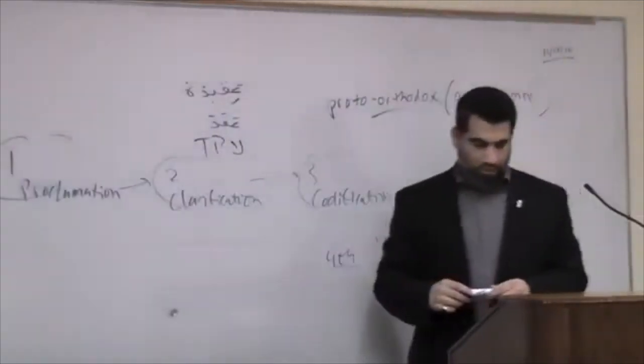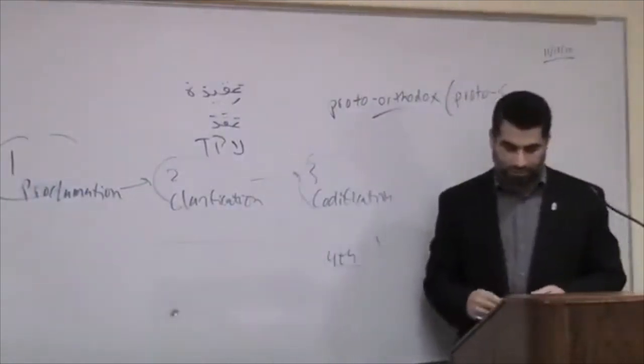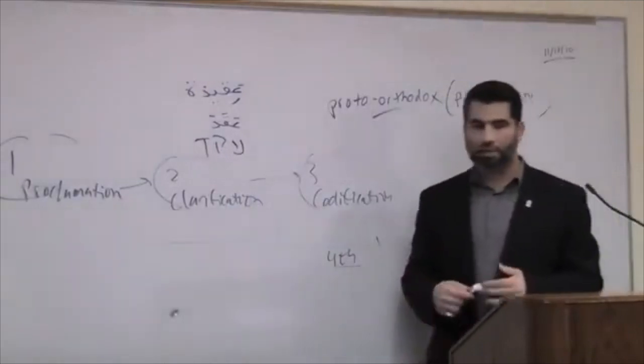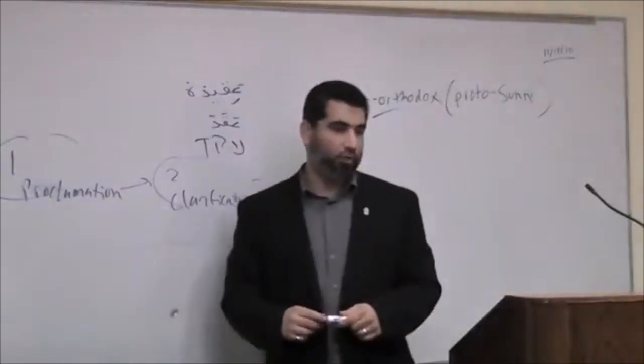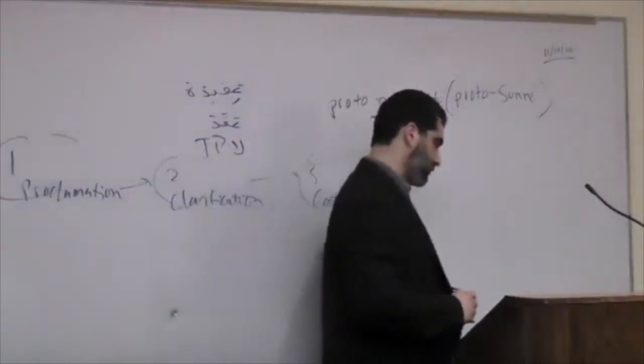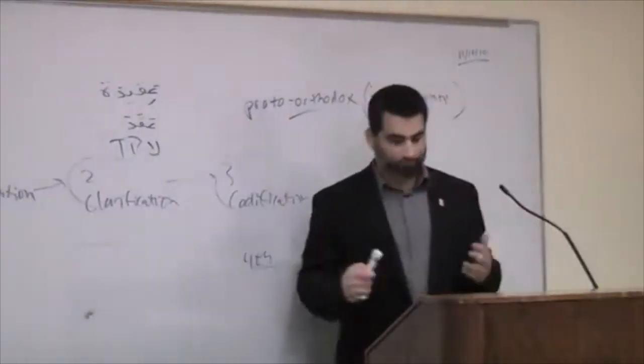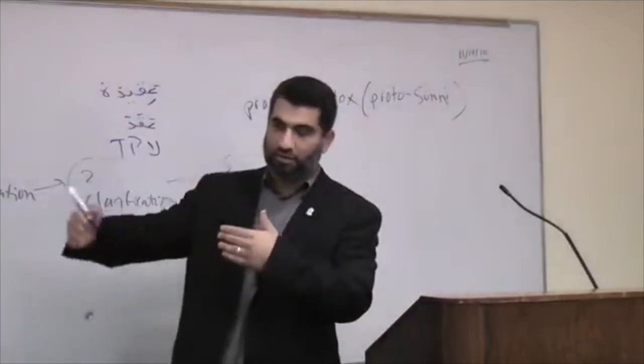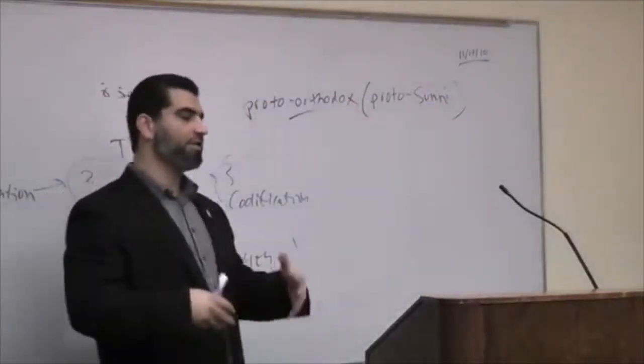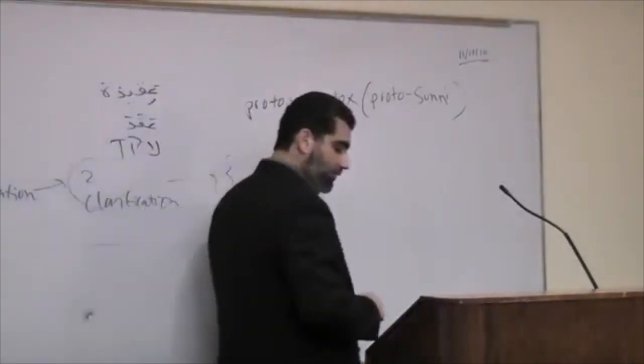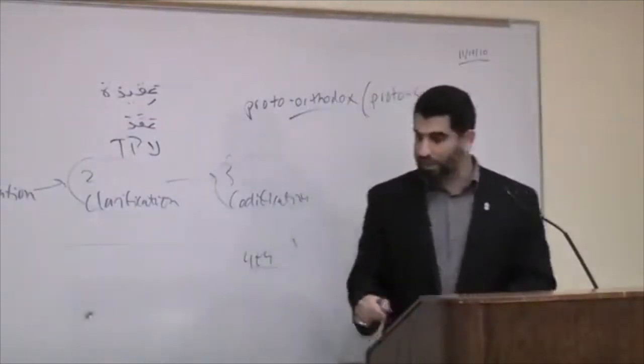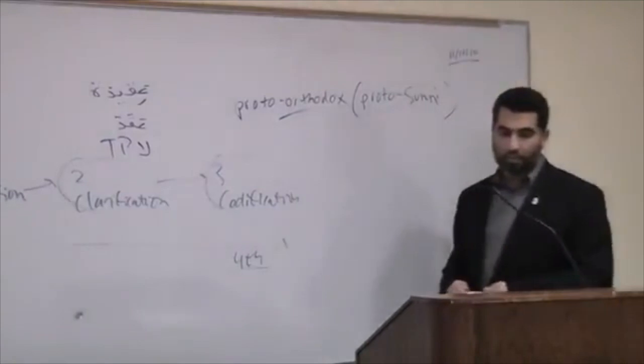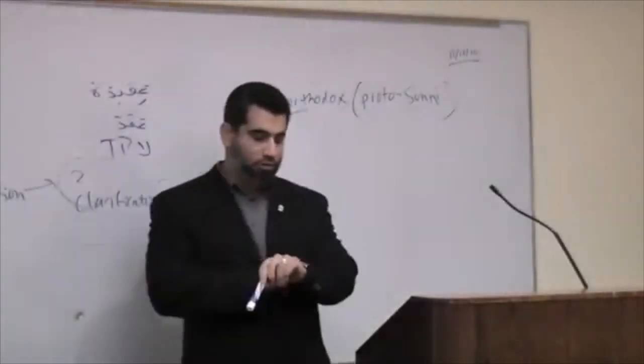This was during the formative years, the clarification process, and now we move into codification. The Proto-Sunni fathers from the late 1st century to the early 3rd century, they're working under the framework of Sunni orthodoxy. Some of these scholars, Abu Hanifa, for example, Malik ibn Anas, Abu Muhammad ibn Iqlis al-Shafi'i, Jaffa al-Sadiq ibn Muhammad, Hasan al-Basri, Saeed ibn al-Sayyid, on and on and on, these Proto-Orthodox Muslim scholars.